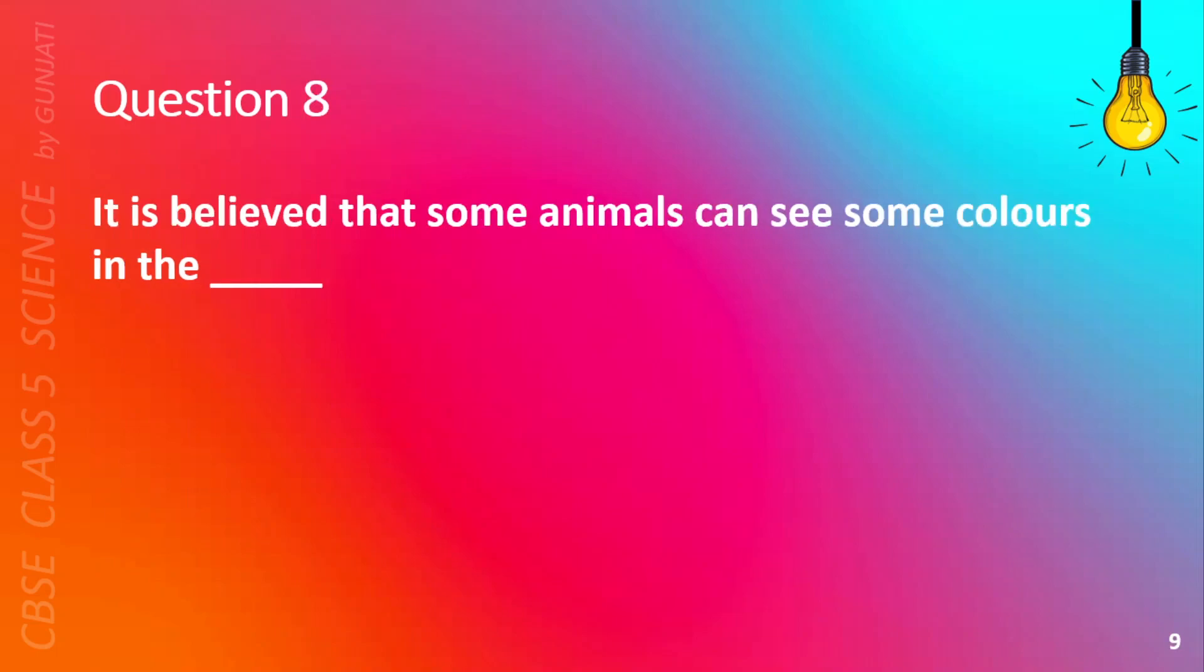Question 8. It is believed that some animals can see some colors in the blank. A. Night, B. Daytime, C. Anytime, or D. Summer. The correct answer is B. Daytime.